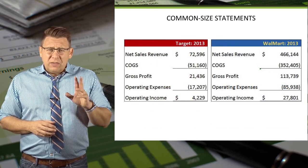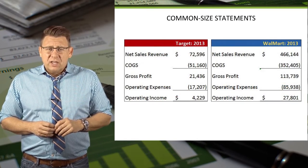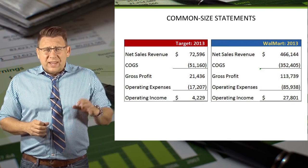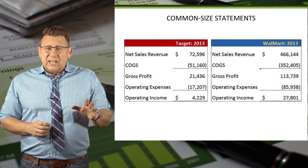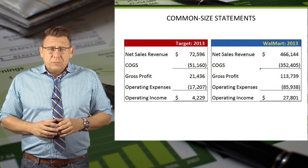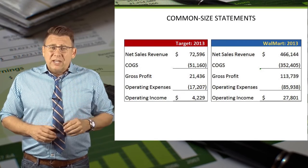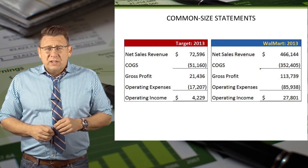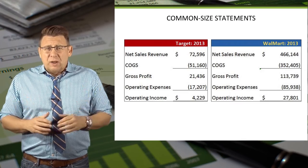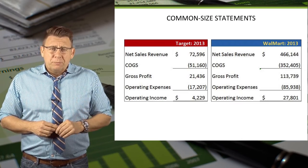When we compare the income statements of the two companies, there's no comparison really. Walmart has significantly higher revenue and operating income. But this is exactly why we need common size financial statements — because otherwise, the larger company would always look like the better performer.